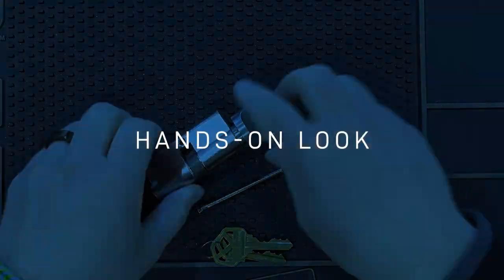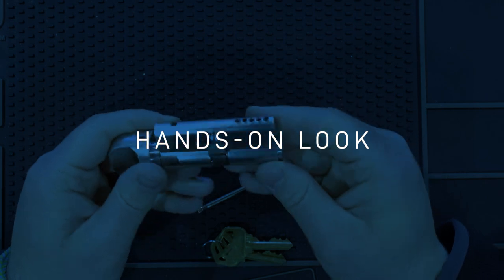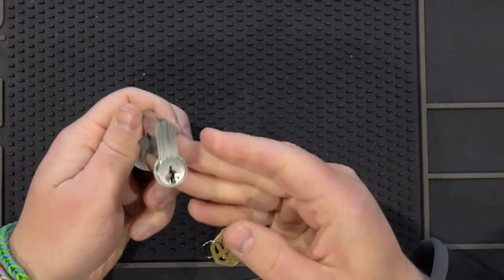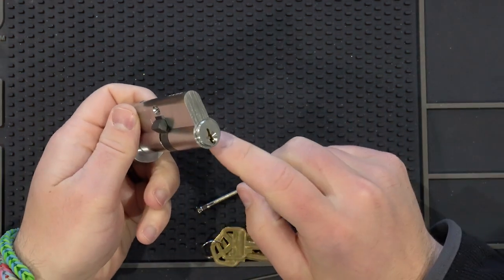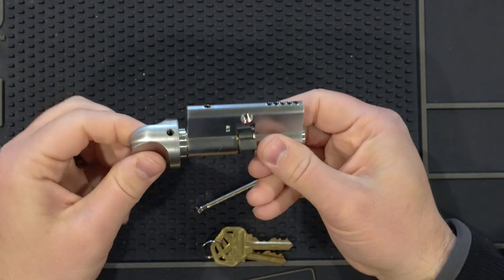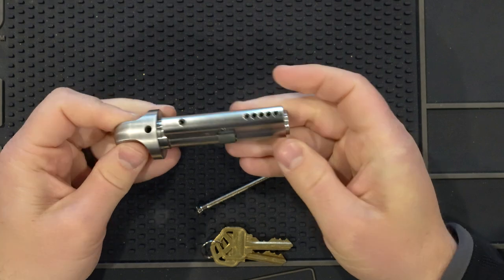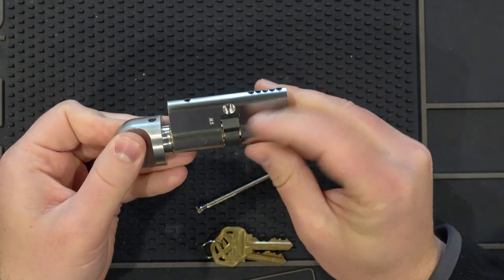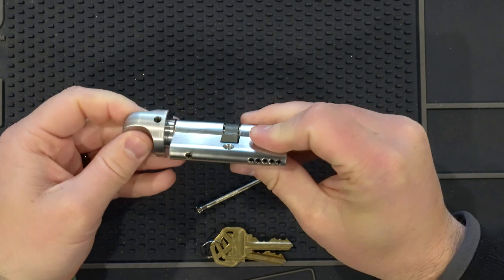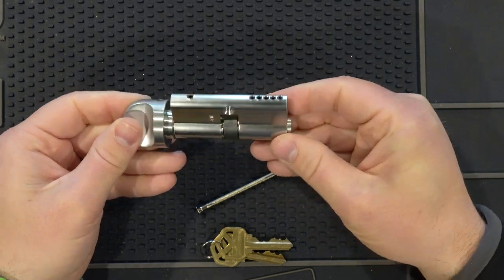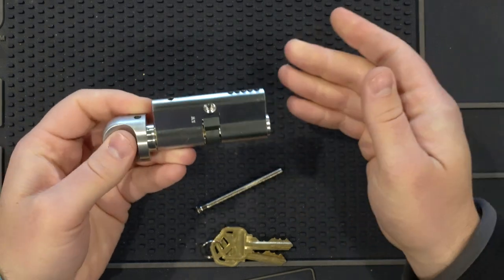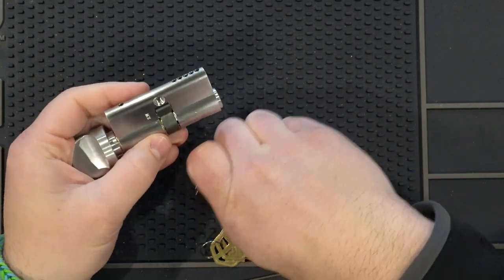Let's talk about this profile lock for a moment. This is a Kwikset keyway - it's a keyway on one end and a thumb turn on the other. As you can see, the key or the thumb turn activates this activator right here to open and close the lock.